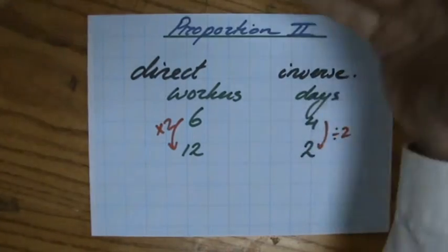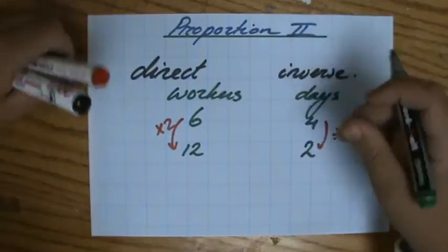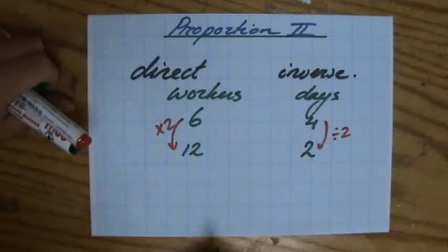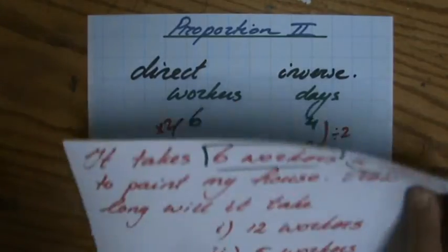If I have 12 people now, twice as many people, the job will be done in half the amount of time. So divide it by two, okay? So a very good example of inverse proportion.